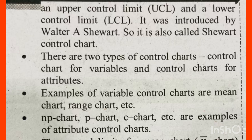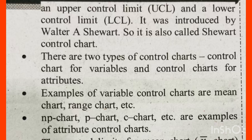There are two types of control charts: control charts for variables and control charts for attributes. Examples of variable control charts are mean chart and range chart. Examples of attribute control charts are np chart, p chart, and c chart.